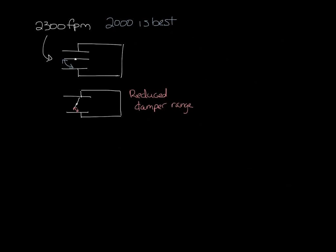So oversizing can also mean that the velocity at minimum CFM may be too low. So let's draw the inlet of the box. You have a flow sensor here, and it's piped to a controller.